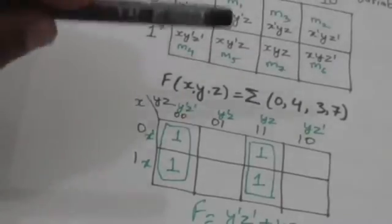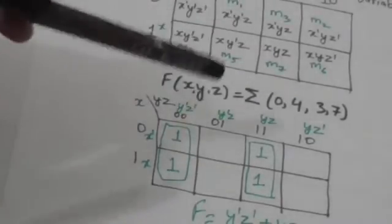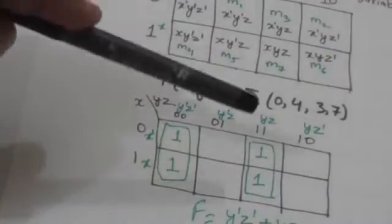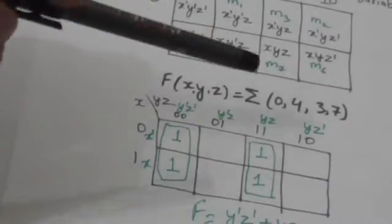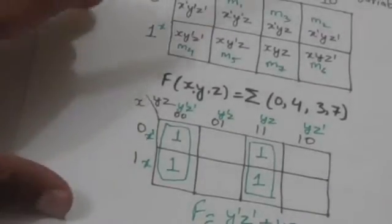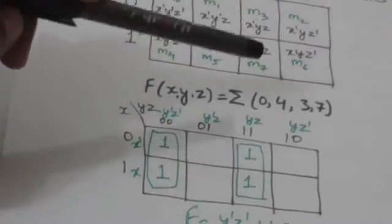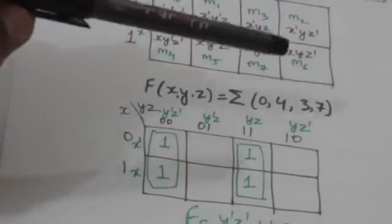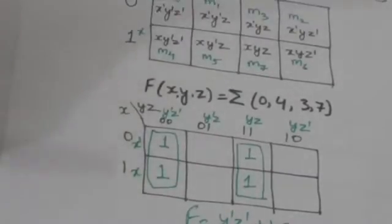Now, how can we minimize a function using this K-map? First of all, we will mark the squares of the K-map whose min terms are included in the function.